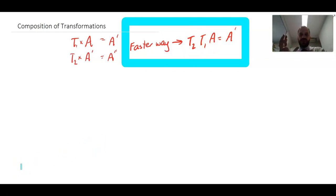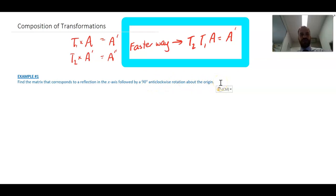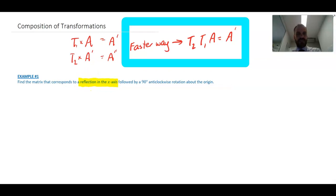We can go one step further through an example. The question asks: find the matrix that corresponds to a reflection in the x-axis followed by a 90-degree anti-clockwise rotation about the origin. So we're performing two transformations: reflection in the x-axis is number one, and a 90-degree anti-clockwise rotation is number two.